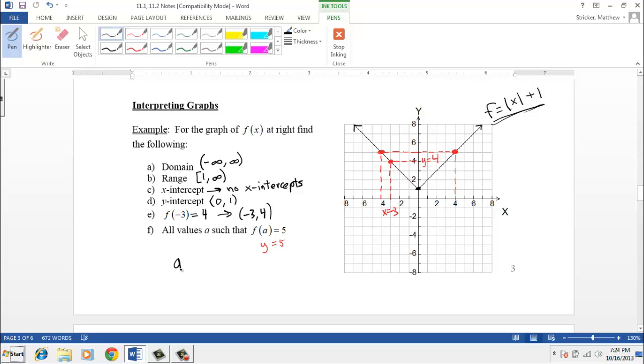So I want x values, or they're using the terminology a values, a equal to negative four gives five, and a equal to positive four gives five as an output. That is because this point is the point four, five, and this is the point negative four, five.